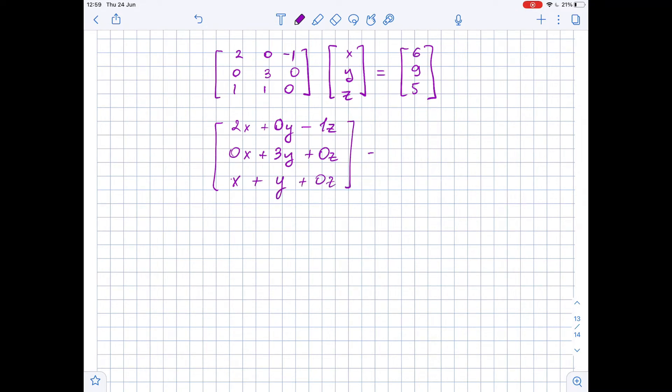And this equals [6, 9, 5]. Okay, let's simplify it so we get 2x - z, 3y, and x + y.